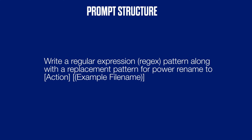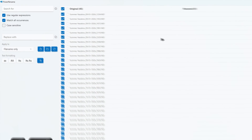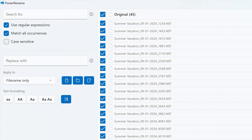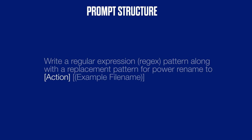The prompt structure we'll be using is: 'Write a regular expression pattern along with a replacement pattern for Power Rename to [action] [example filename].' This tells ChatGPT to write something for us to copy and paste into the search for box, and something to copy and paste into the replace with box in Power Rename. The action is how we want our files renamed, and the example filename gives more context to ChatGPT.